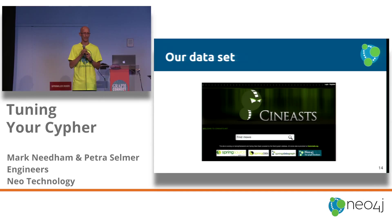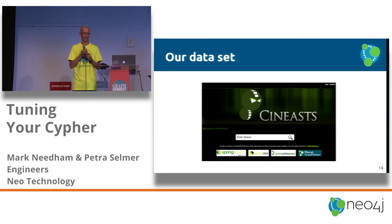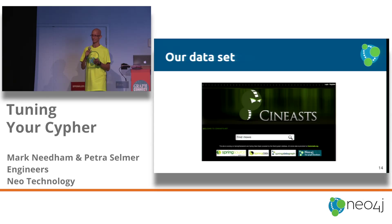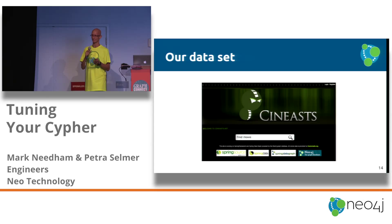We're going to look at some queries using the CineEast dataset — an extended version of the Play Movies dataset that comes in the Neo4j browser when you download it, with more movies and more information from IMDB. Hopefully most people have seen movies so you'll be able to relate to the queries. We're going to start really simple and get a little bit more complicated as we go.